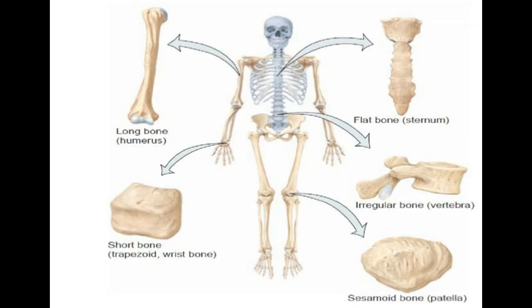Let's look at some examples of each. If we take the humerus — that big long bone from pretty much the shoulder all the way down to the elbow — that is a long bone. We then have flat bones, for example the sternum, that big breastplate in the middle of your chest. We then have irregular shaped bones, such as the vertebrae, which have a really specialised function. We also have the sesamoid bone — an example being the patella — and we'll look at why in a moment.